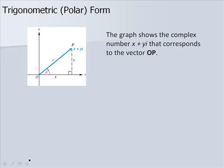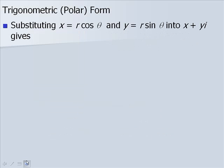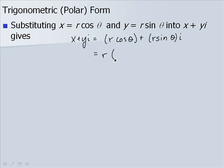In this graph, we see the complex number x plus yi that corresponds to the vector OP. The relationship among our values: x is r cosine of theta, y is r cosine of theta. R is the square root of x squared plus y squared. And the tangent of theta is y over x, if x is not equal to 0. Substituting x equal r cosine of theta and y equal r sine of theta into x plus yi gives r cosine of theta plus r sine of theta times i.